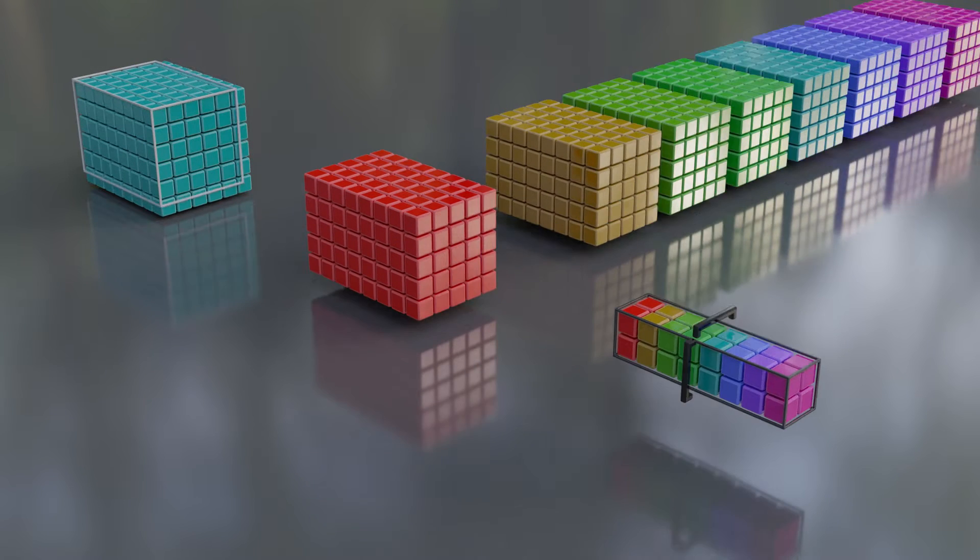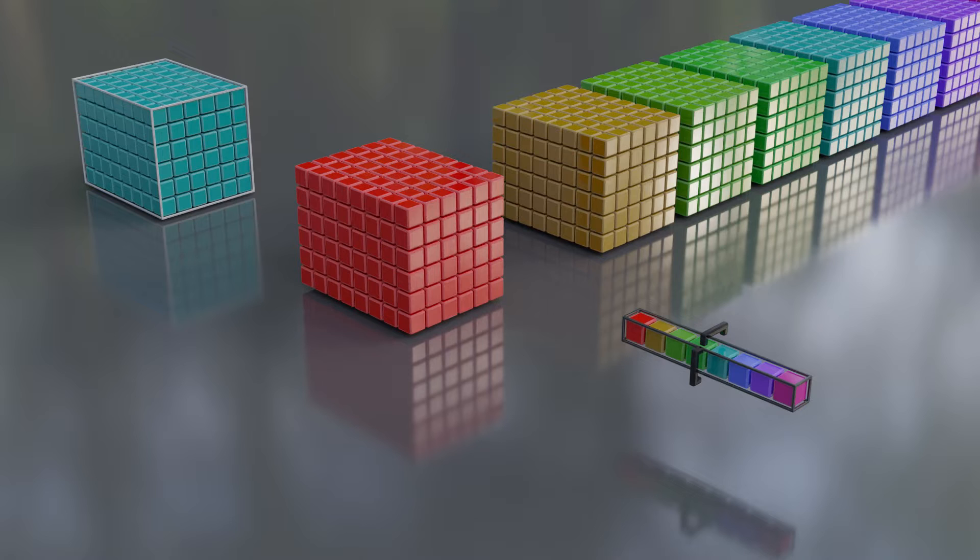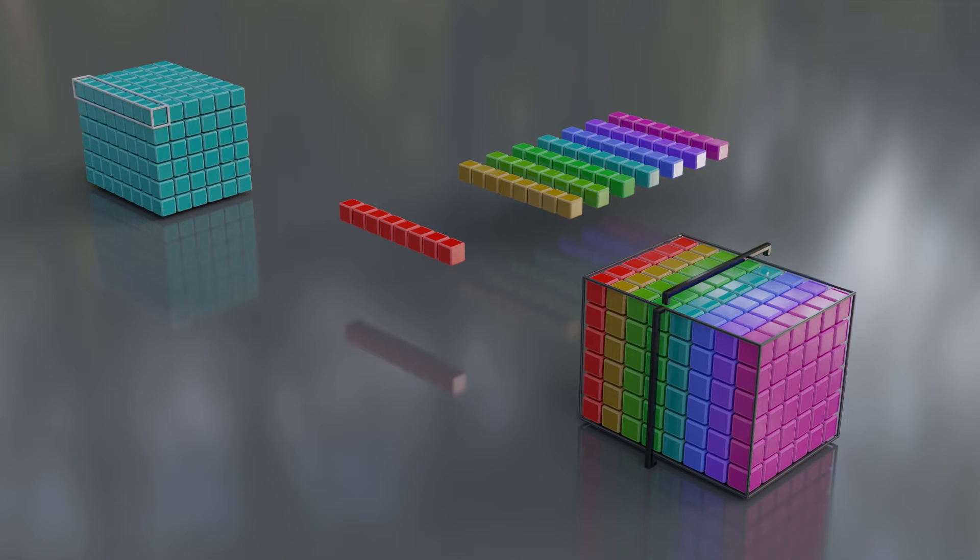A kernel as large as the input resolution will cause the output to shrink to one by one because it uses the entire input for a single patch. A one by one kernel will use each pixel for its own patch, so the output will be the same resolution as the input.